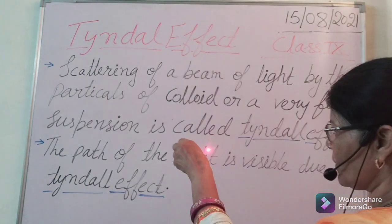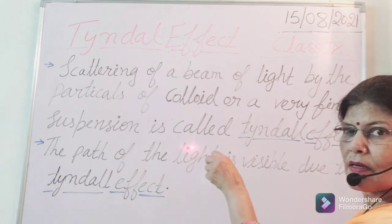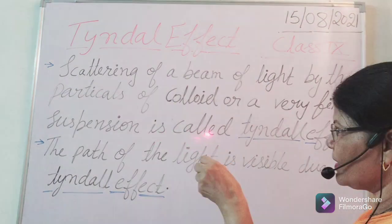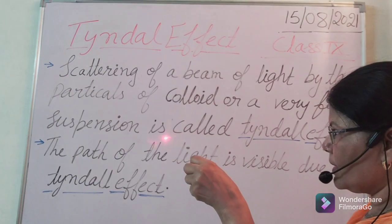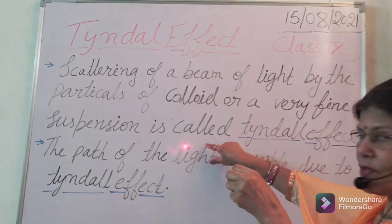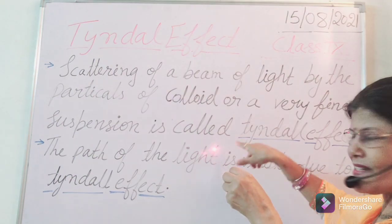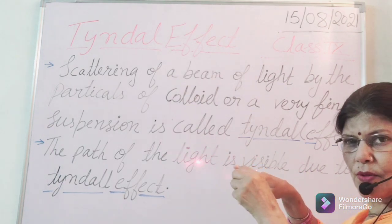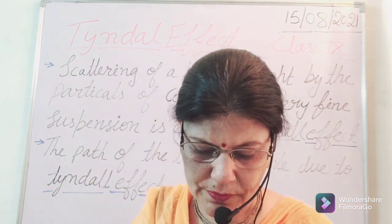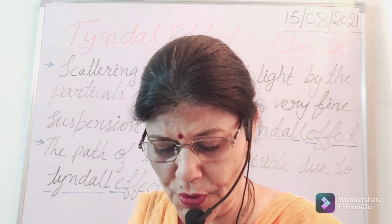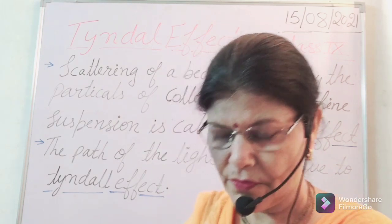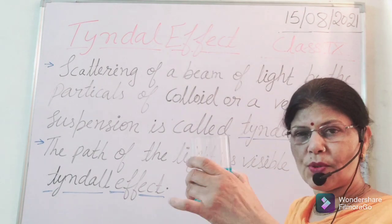So you can see here — are you able to see on the board? We can see this light on the board, but we are not able to see the path of the light. We cannot see the path of the light in air. So let us see what happens in the case of the copper sulphate solution.